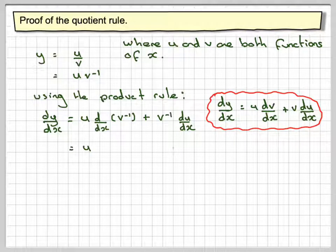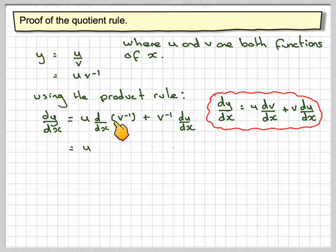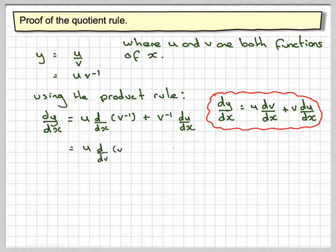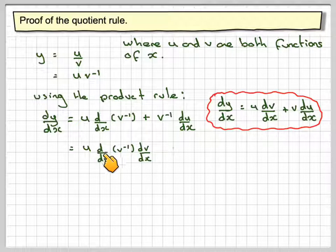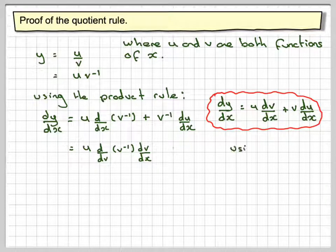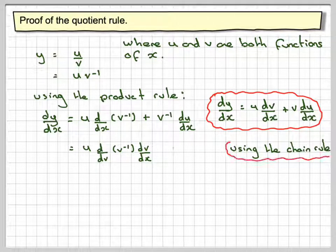So that's going to give me u. Now the derivative of this we can't do directly, so we have to do d dv of v to the minus 1, and to compensate for that we have to do dv by dx. This is called implicit differentiation, so we use the chain rule.